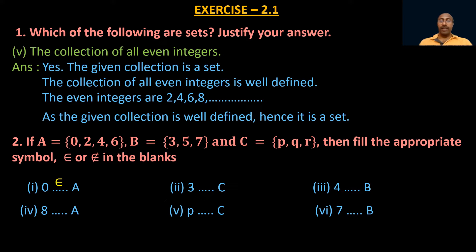Continuing: 4 is not present in B, so we write 4 ∉ B. And 8 is not present in A, so we write 8 ∉ A. Next, p is present in set C, so we write p ∈ C. Finally, 7 is present in B, so we write 7 ∈ B. In this way, we use the symbol 'belongs to' or 'does not belong to' based on whether an element is present in the set.